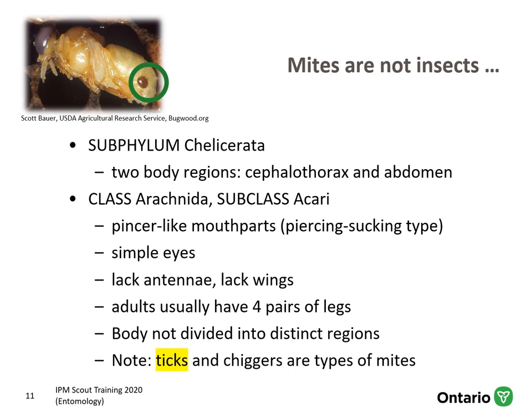Mites are not insects — they're from a different subphylum. Mites have two body regions: the cephalothorax and the abdomen, though the cephalothorax is a head and thorax fused into one and it's often difficult to see distinct body regions at all. Mites are part of class Arachnida, subclass Acari. They have pincer-like or piercing-sucking mouthparts, simple eyes but no compound eyes, and they lack antennae and wings. Adults have four pairs of legs instead of three. Note that ticks and chiggers, which you might encounter when scouting, are also part of this group. One example shown is a varroa mite on a bee pupa — a very serious pest of bees.